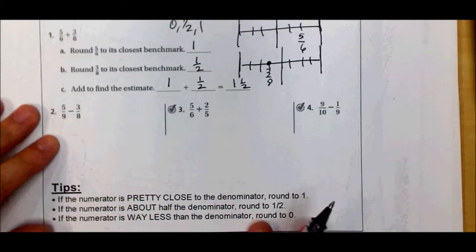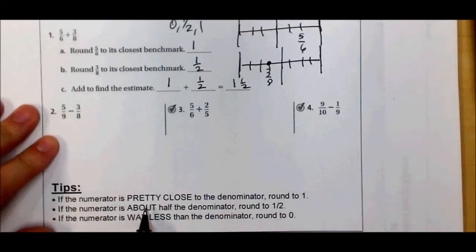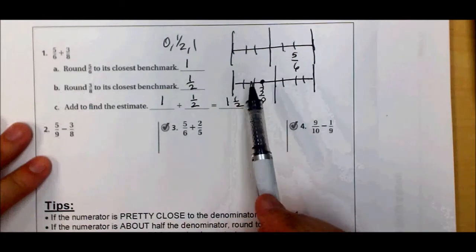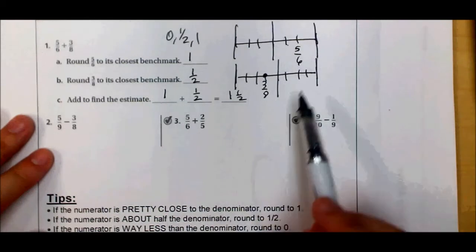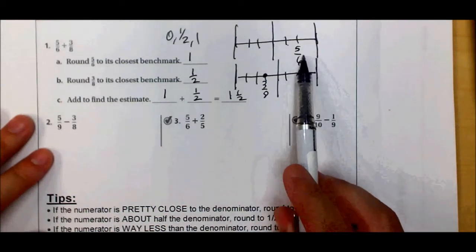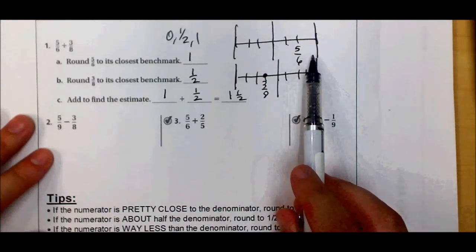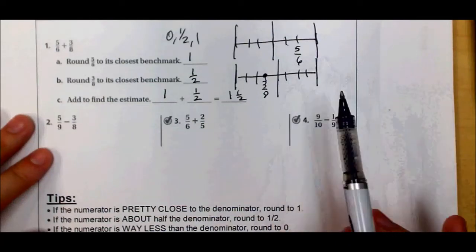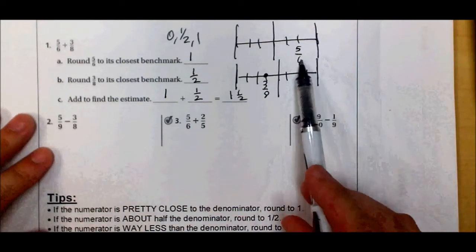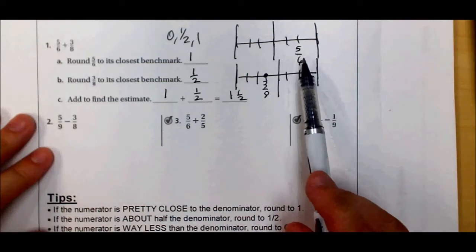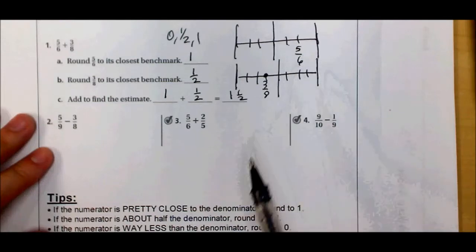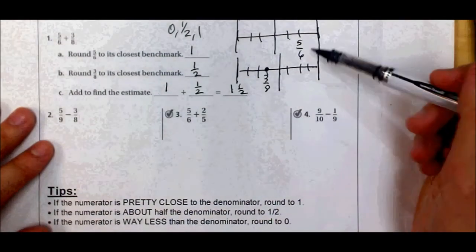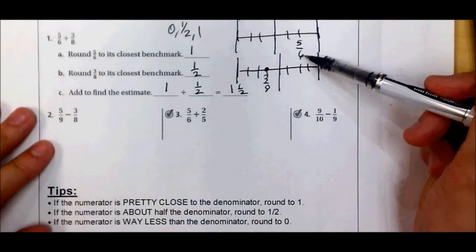If the numerator is pretty close to the denominator — like five-sixths, where five is very close to six — then you round to one. This is because one whole is six-sixths, seven-sevenths, eight-eighths, nine-ninths, ten-tenths, and so on. If the numerator is one less than the denominator, it's just one little piece away from being one whole. So if the numerator and denominator are very close to each other, the fraction is close to one.